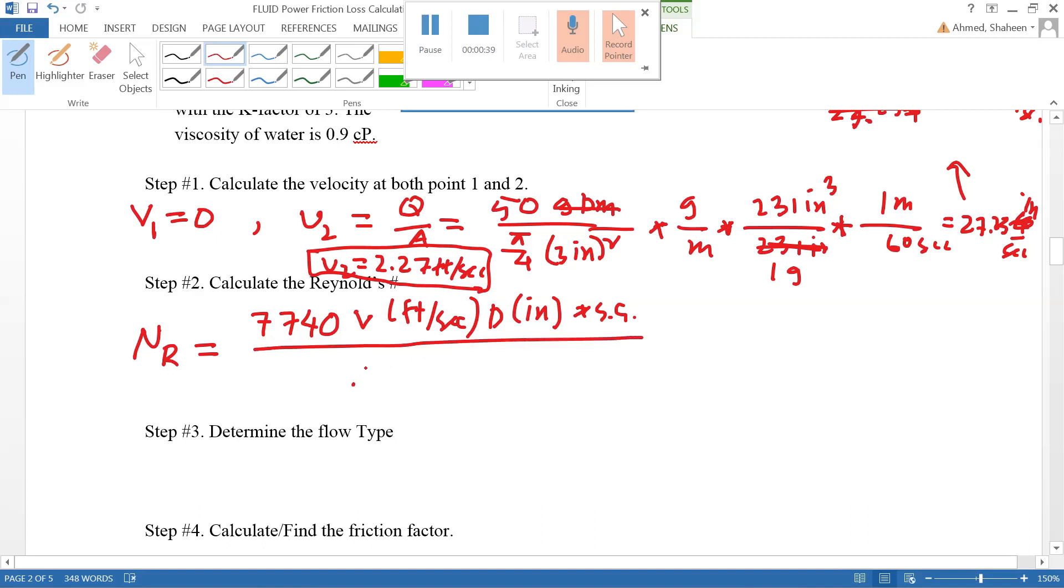The dynamic viscosity is in centipoise. If we input all these values here: 7740 times the velocity of 2.27 feet per second, times the diameter of 3 inches, times the specific gravity...